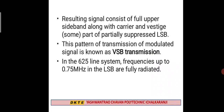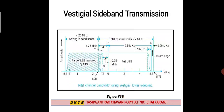In the TV 625-line system, the frequencies up to 0.75 MHz in the lower sideband are fully radiated. When you have lower sideband signals, you decide which part to transmit and which part to suppress. The portion beyond 0.75 MHz in the lower sideband is suppressed.